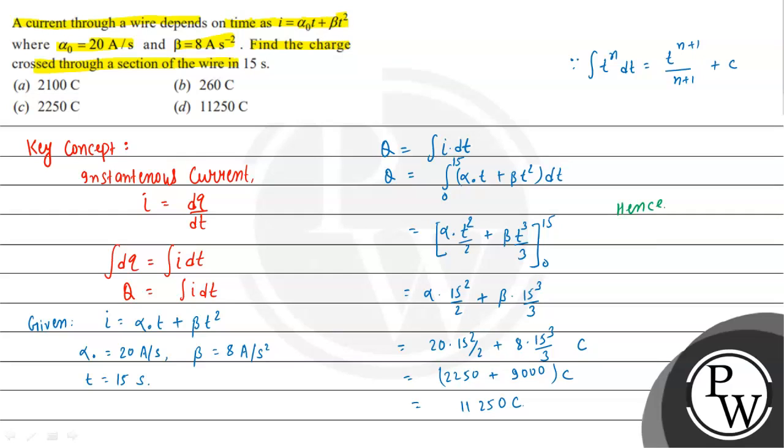Hence, the charge through the section of wire Q = 11,250 coulombs. This is the final answer. If we see the options given, option B is our correct choice. I hope you understood the solution. Best of luck, thank you.